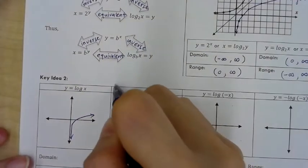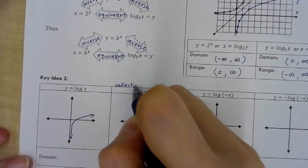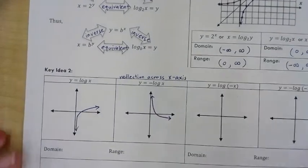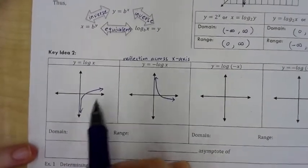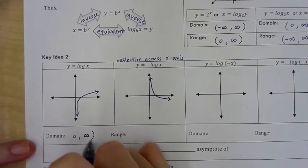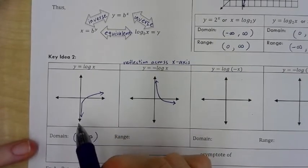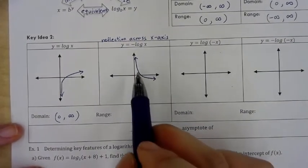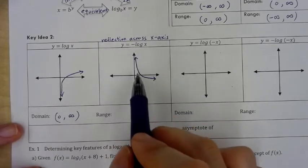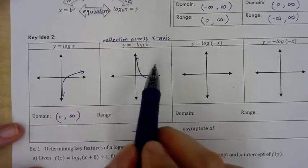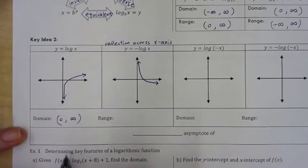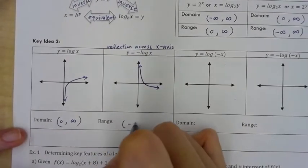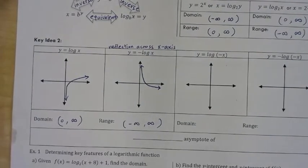Make a note: negative in front means reflection across the x-axis. The domain of this reflected function is still 0 to positive infinity, because tracing left, the closest you can get is 0. The range is negative infinity to positive infinity — you can go all the way up and all the way down.